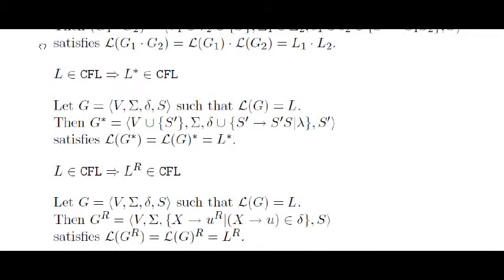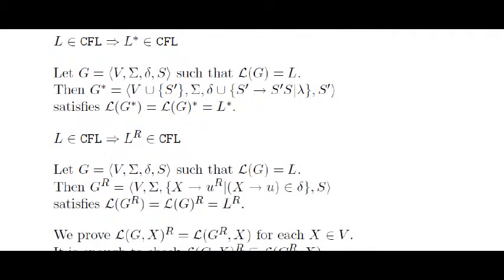In a similar way, we can get convinced that context-free languages are closed under the Kleene star operation. That is, if there is a grammar for a language, then there is also a grammar for the star of that language. If we have a grammar for a language L, it is enough to add a new initial symbol S' and from it generate the concatenation of zero or more S. In this way, we can generate the concatenation of zero or more words from L, obtaining L star.